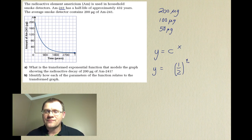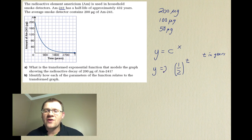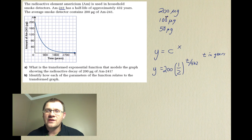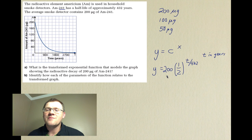Because it's a half-life problem, the base c is 1/2. The variable is time t in years, and the exponent is t/432, since after 432 years the exponent equals 1, giving (1/2)^1 = 1/2, and 1/2 · 200 = 100 micrograms — which matches the half-life definition. The amount you start with goes out in front, so the equation is y = 200 · (1/2)^(t/432).